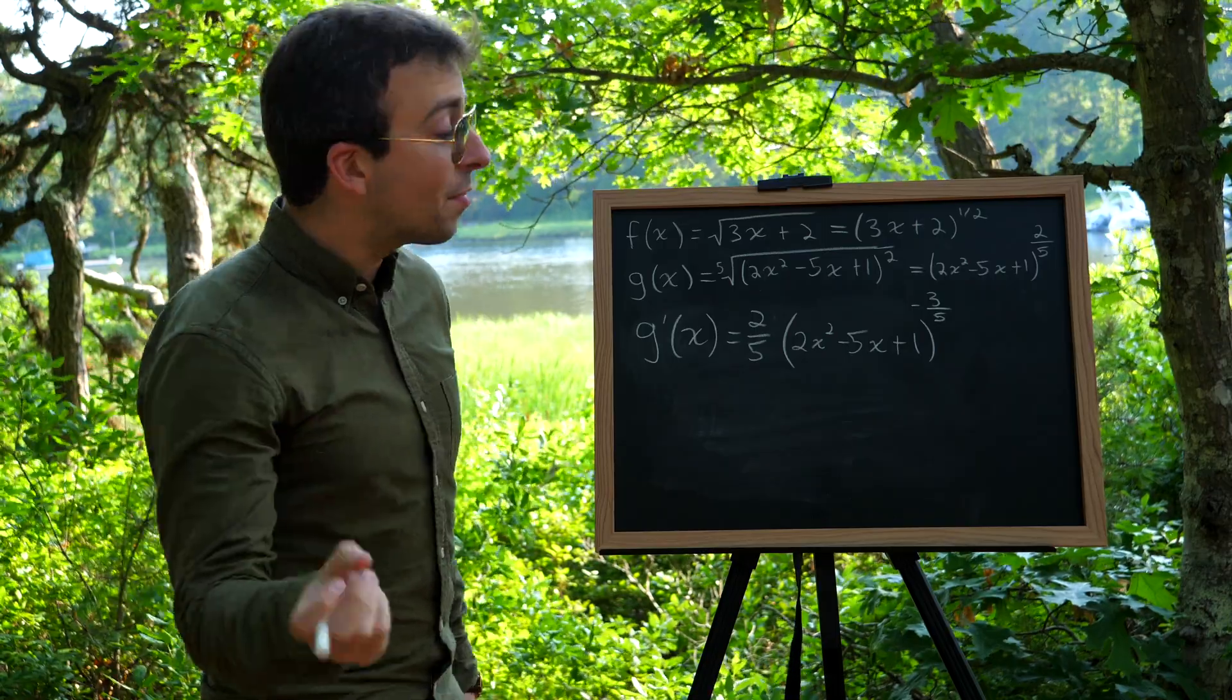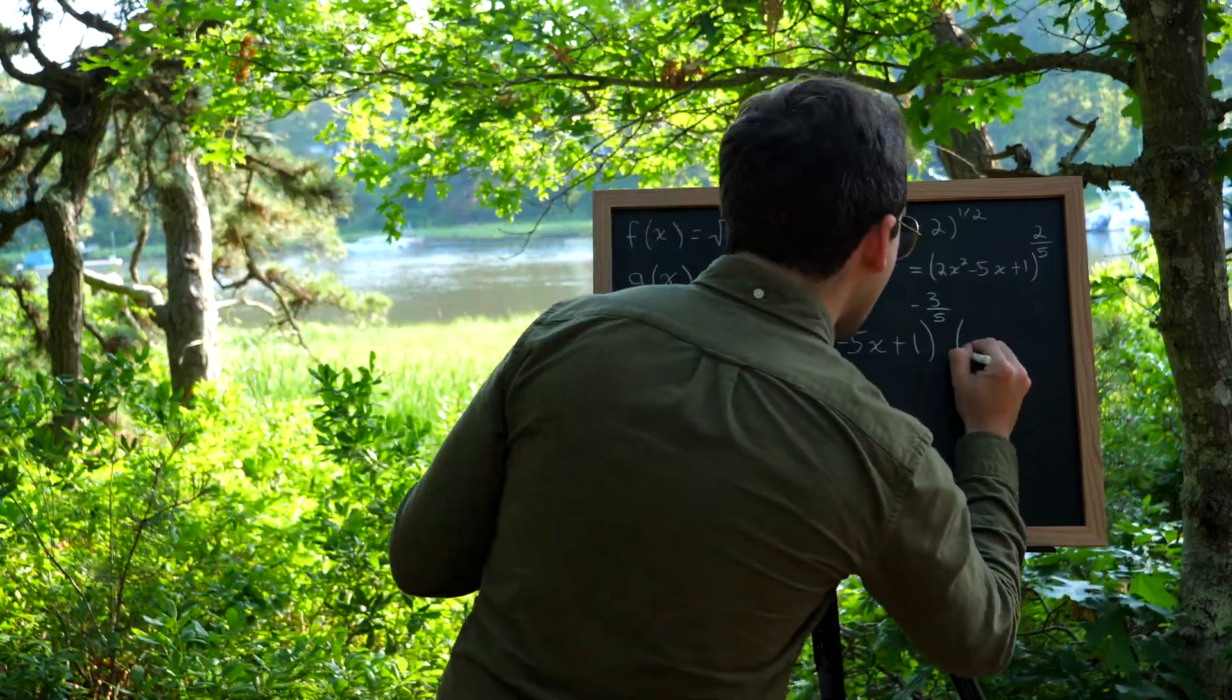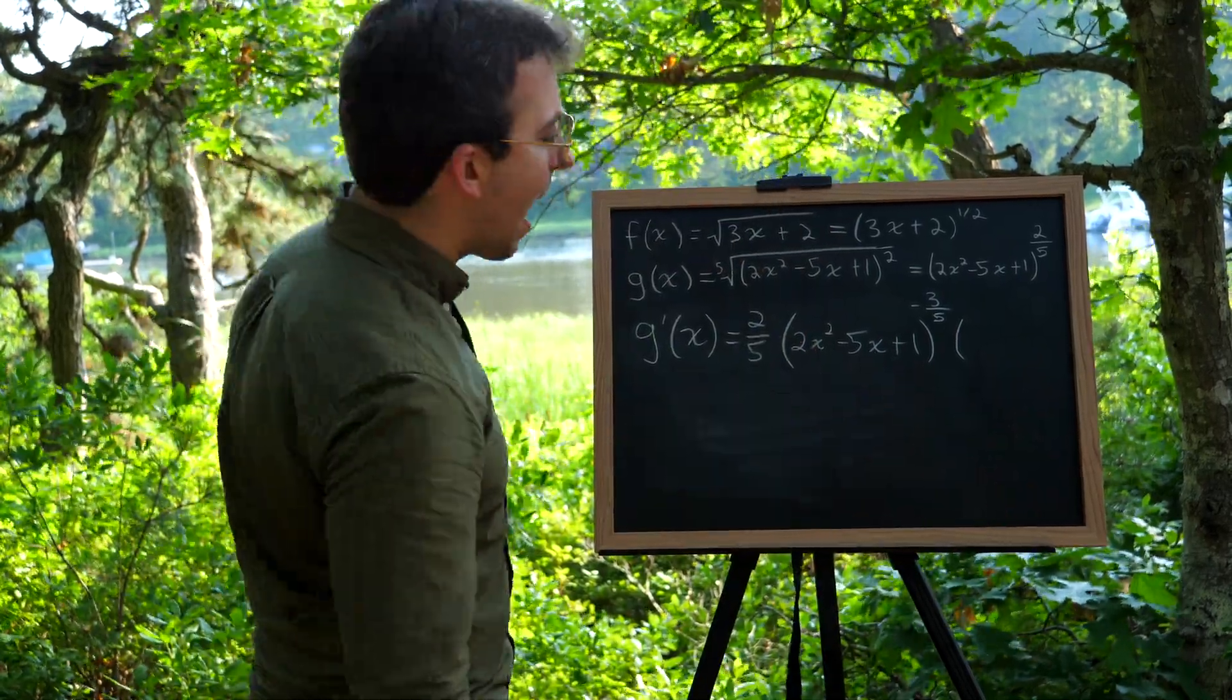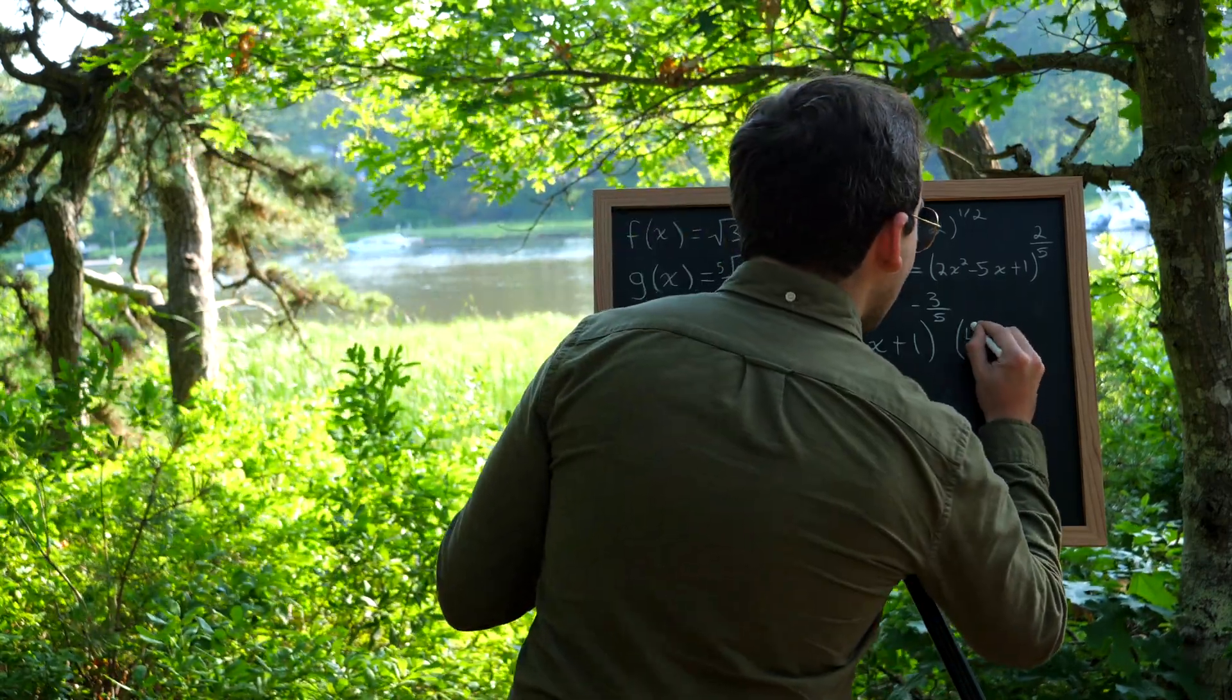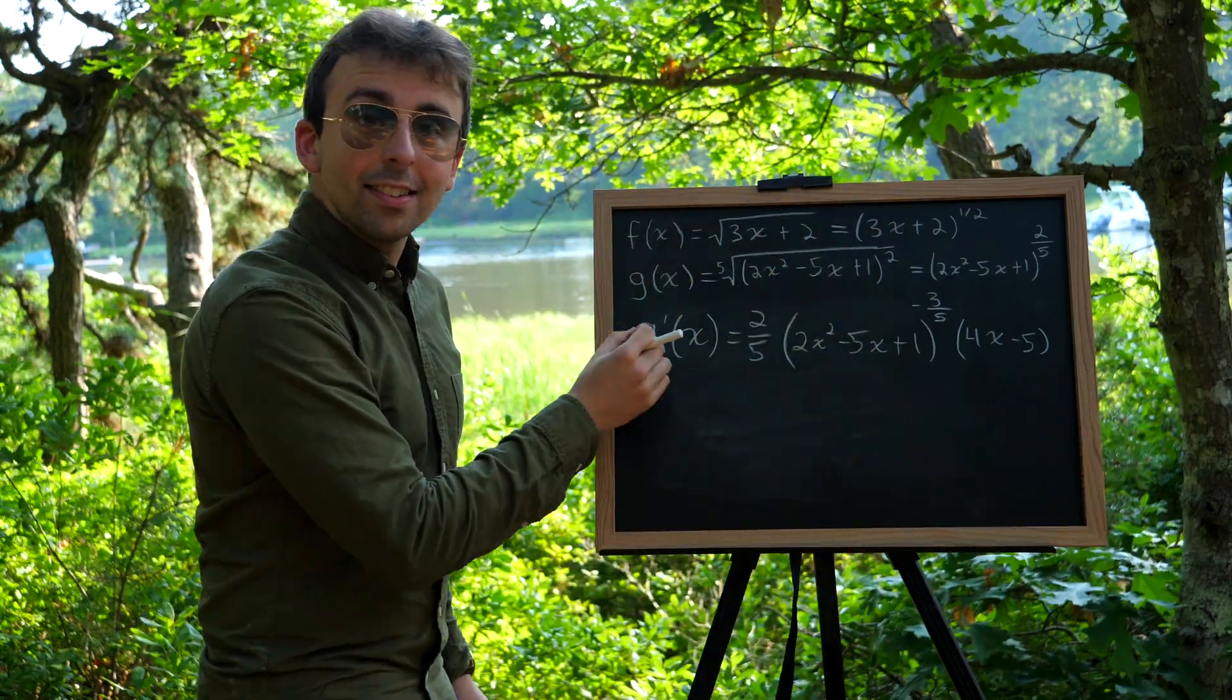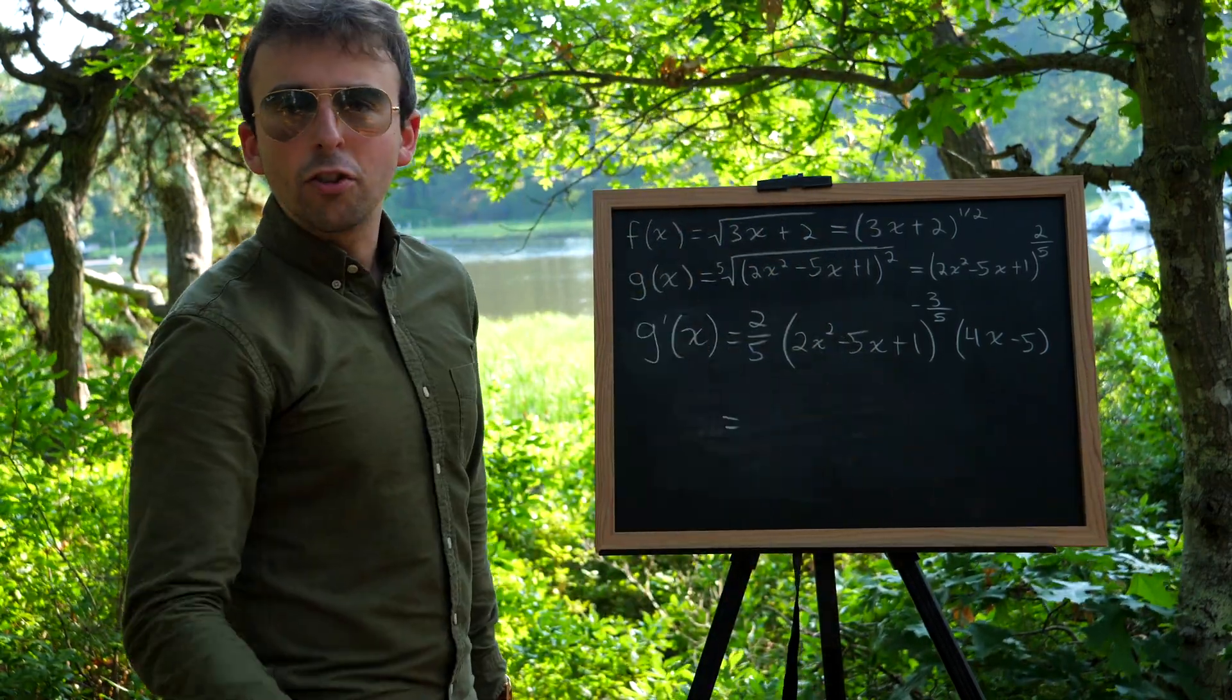Now we're not done. Remember, we've got to multiply by the derivative of the inside function. That's the last step. The derivative of this guy is just a couple applications of the power rule. That's going to become 4x minus 5. So that's what goes over here. And that's it. That is g prime. And again, I will rewrite it in a way that you may prefer.